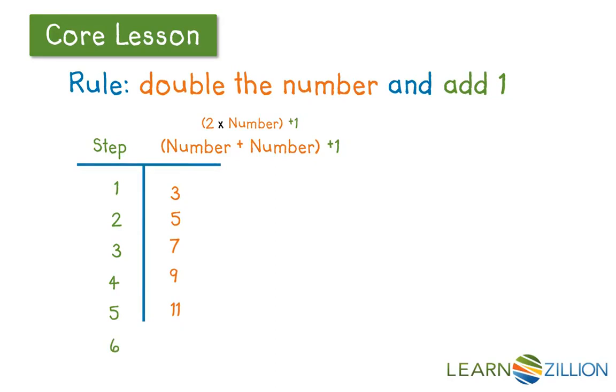So let's look at number 6. Step 6, I know it will be an odd number, and it will be growing by 2. So it should be 13. 2 times 6 is 12, plus 1 is 13.